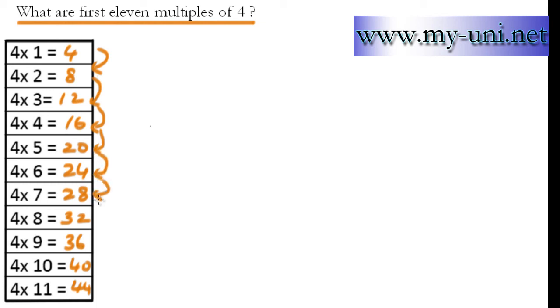24 plus 4 is 28, 28 plus 4 is 32, 32 plus 4 is 36, 36 plus 4 is 40, and 40 plus 4 is 44. So every time you go down, you are adding just 4 to the previous multiple.